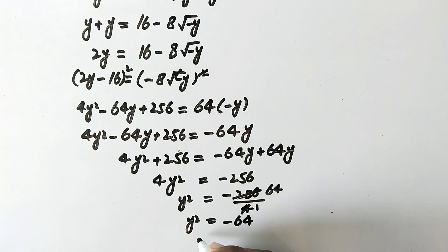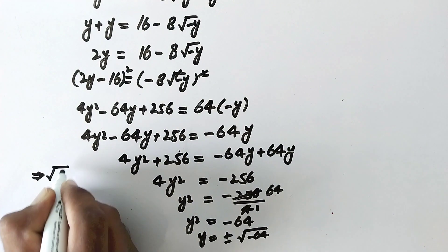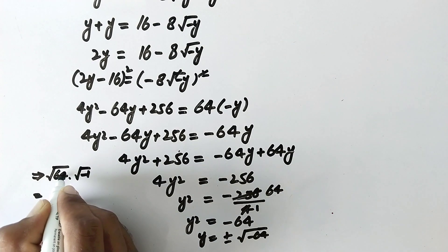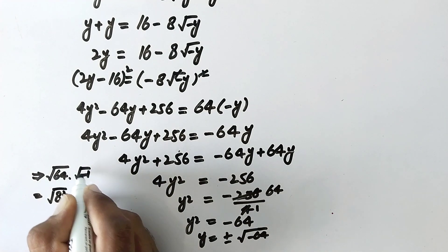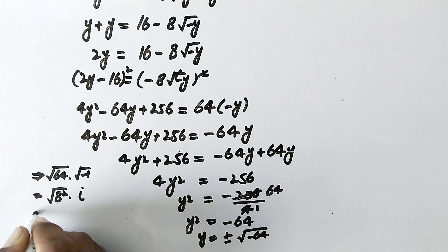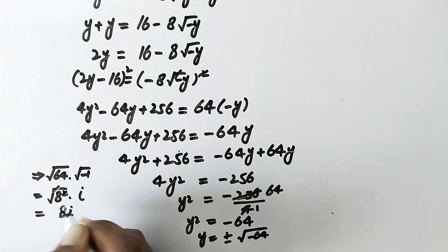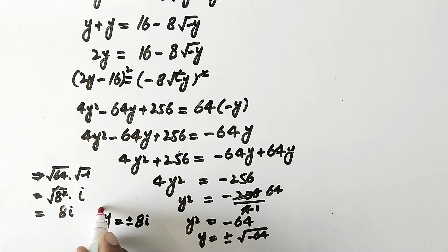4 times 1 is 4, and 64 times 4 is 256. So here y squared is equal to negative 64. By taking square root on both sides, y is equal to plus or minus square root of negative 64. This square root of negative 64 can be written as square root of 64 times square root of negative 1. Since 64 is 8 squared, the square root cancels, and since square root of negative 1 equals i, the answer is y is equal to plus or minus 8i.